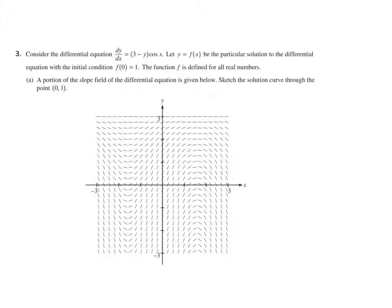For our next problem, they are wanting us to sketch a solution curve through the point (0, 1). The first thing I would do is pinpoint where (0, 1) is. From this, we are going to sketch what looks like a curve, trying to mimic the slope segments as best we can. On the other side we're still following our slopes, making sure we have those. Try your best to stay within those lanes — and there's going to be a good solution curve there.